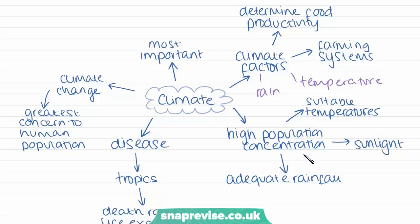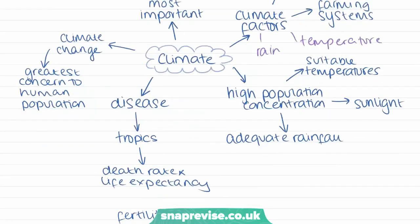High concentrations of population are determined by climate factors such as adequate rainfall and temperatures suitable for the growth of livestock and crops, because humans need to eat and will locate themselves where farming can take place. However, characteristics of the climate can also drive the level and nature of diseases. For example, in the tropics we find diseases like malaria, yellow fever, and Ebola, which influence death rates and life expectancy. In the UK, being a non-tropical climate, we suffer from far fewer infectious diseases.